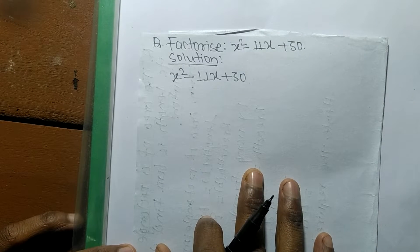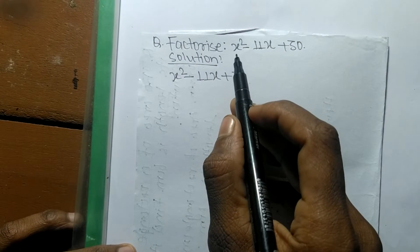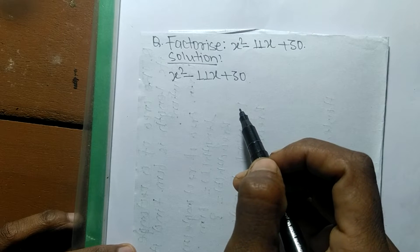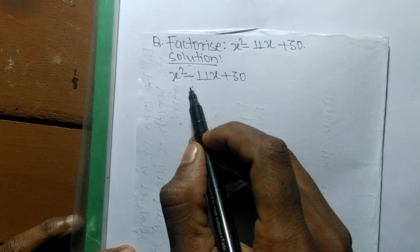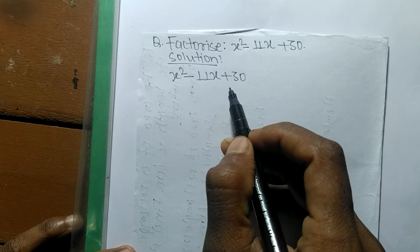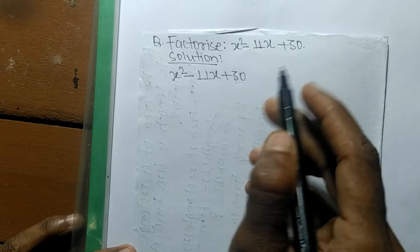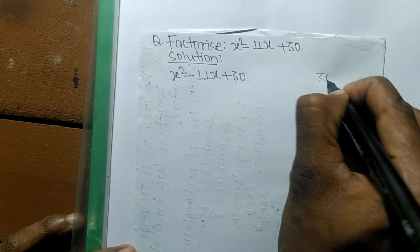Today in this video we shall learn to factorize x squared minus 11x plus 30. For the solution, first we have to find out the prime factors of 30.